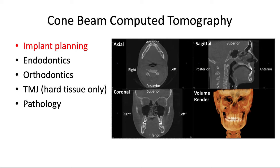The cone beam computed tomography, or CBCT, is an extremely valuable three-dimensional radiographic image. We get three different views: the axial view (top-bottom), the sagittal (side-to-side), and the coronal (front-to-back). We can scan through each of these views to look at hundreds of different slices through the patient's tissue. The software also provides a 3D volumetric render where you can rotate and zoom in on certain areas of interest to see what's going on in a very clear 3D way.